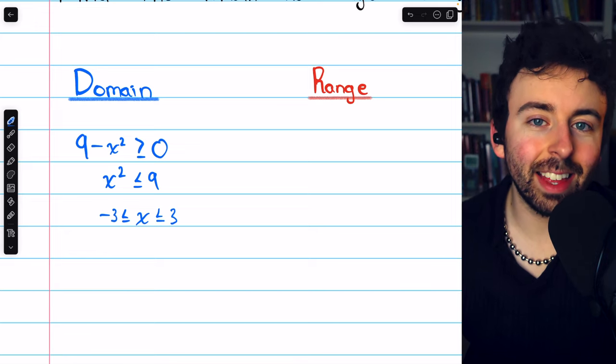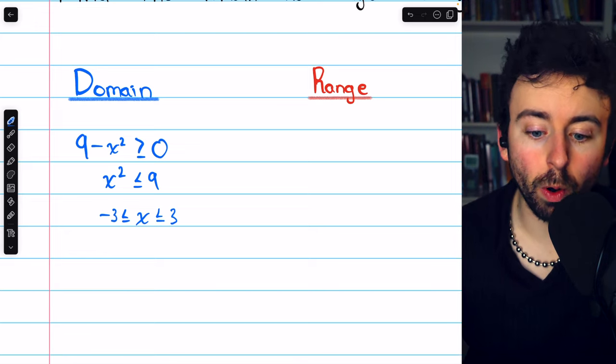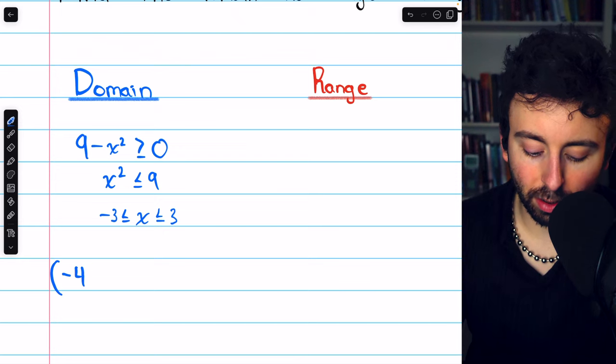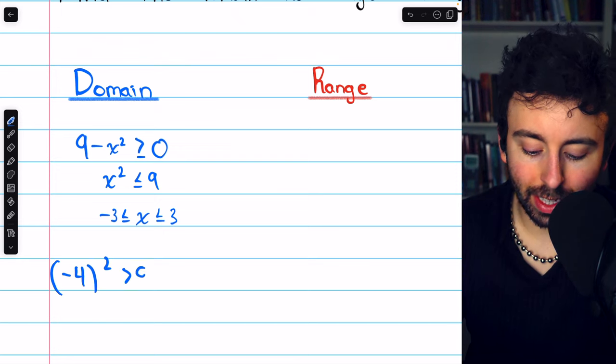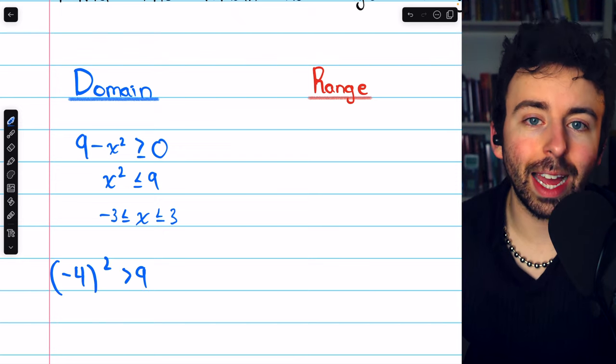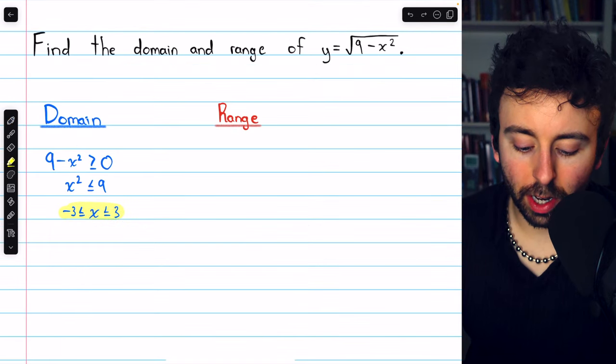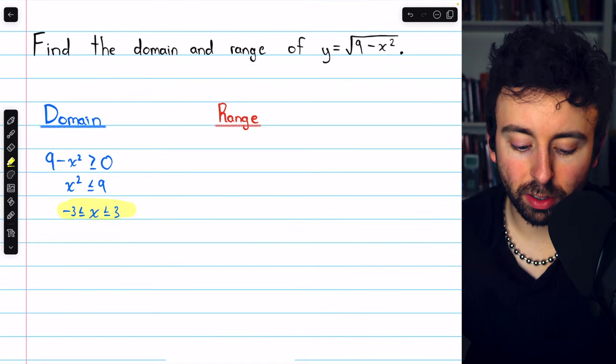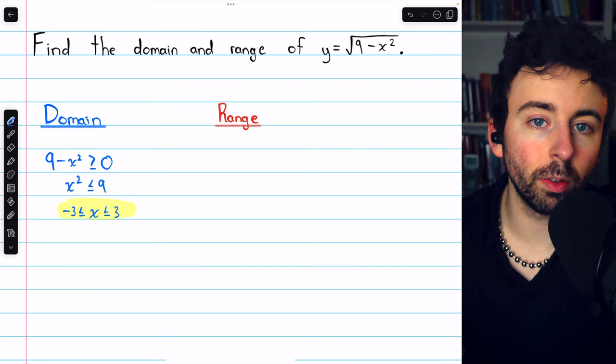If it was any less than negative 3, like negative 4 for example, then its square would be greater than 9, and so again would violate our restrictions. And that's how to find the domain. We consider the restrictions of the function and solve that restriction for x.